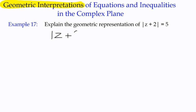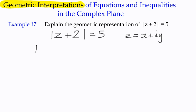We have the equation modulus of z plus 2 equals 5. Since z is a complex number, to explore it we need to split it into its real and imaginary parts. We rewrite the equation by substituting z for x plus iy, giving us the modulus of x plus iy plus 2 equals 5 — we've simply replaced z with the complex number in Cartesian form.